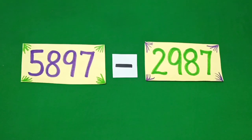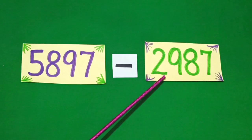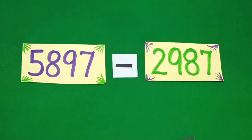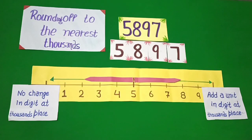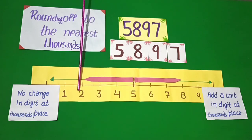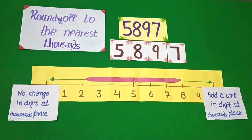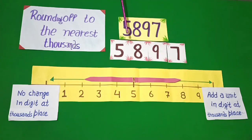Students, we have to find the estimated difference of 5,897 and 2,987. First of all, we do rounding off the 4-digit number to the nearest 1,000. When we do rounding off to the nearest 1,000, we look at the digit at the 100th place. If the digit is 4, 3, 2, or 1 at the 100th place, there is no change in the digit at the 1,000th place. If the digit is 5, 6, 7, 8, or 9 at the 100th place, we add a unit to the digit at the 1,000th place.